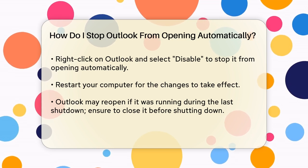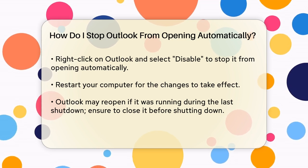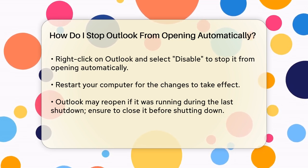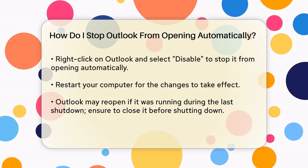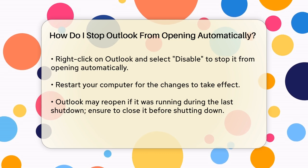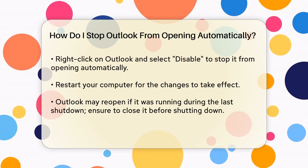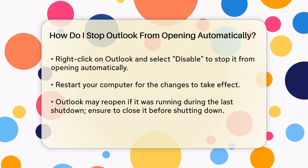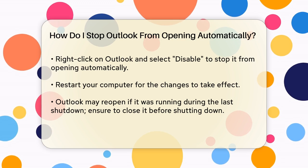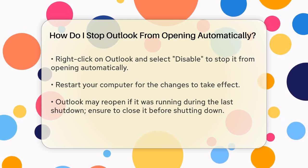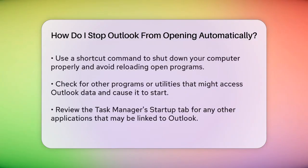If you forget, you can also use a workaround by creating a shortcut on your desktop with the command: %windir%\system32\shutdown.exe /hybrid /t0 to properly shut down your computer without reloading open programs.